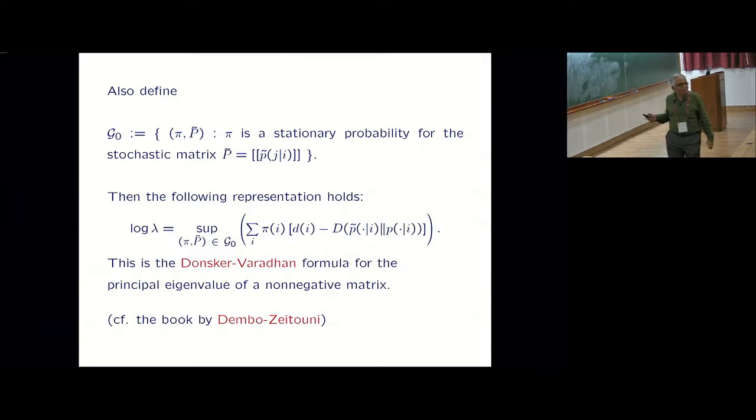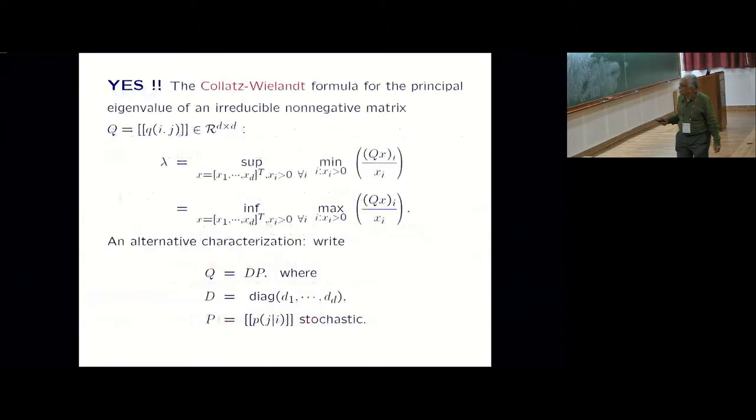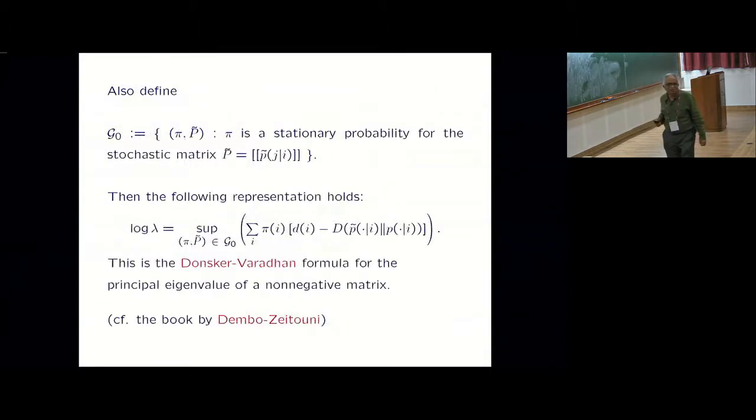D is the usual D. Notational change - here it was a subscript, I made it an argument. So this is the Kullback-Leibler divergence or relative entropy.